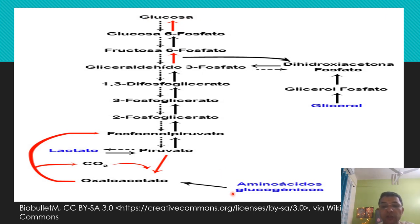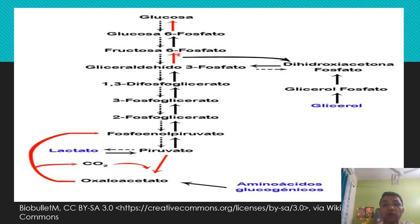The formation of glucose from sources other than glycogen — either from protein or fat — is why this process is known as gluconeogenesis.